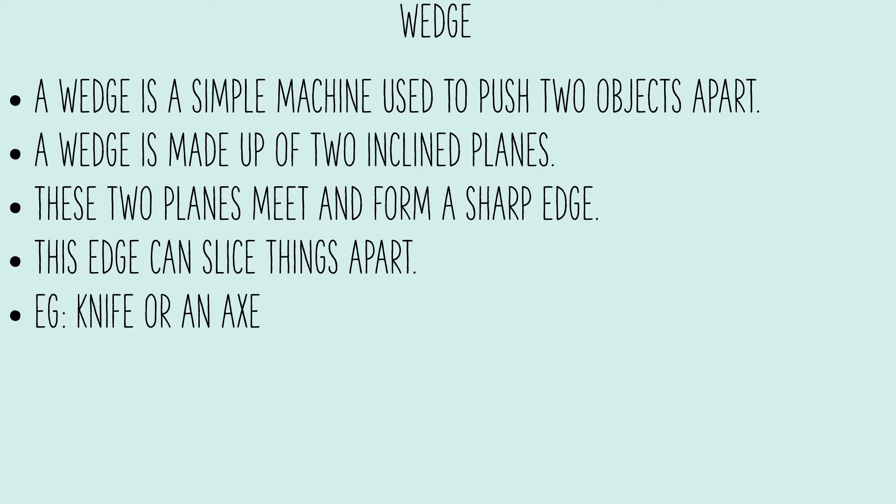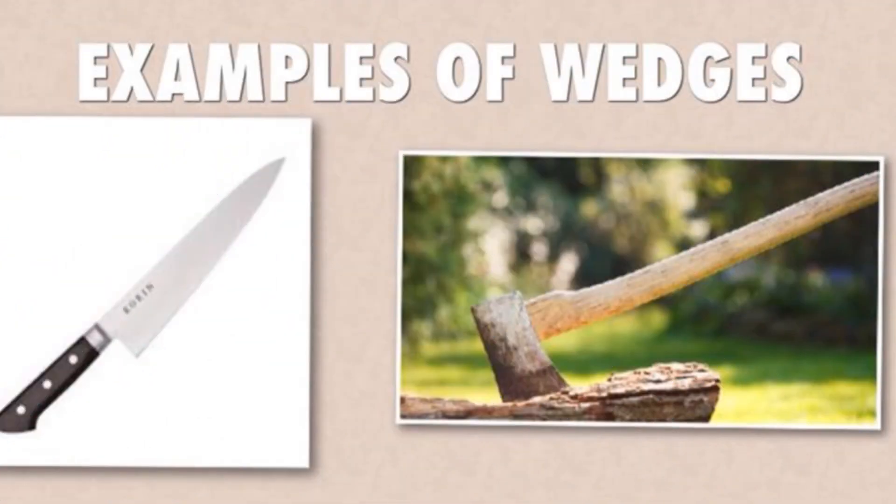Wedge. A wedge is a simple machine used to push two objects apart. A wedge is made of two inclined planes — these two planes meet and form a sharp edge which can slice things apart. Examples: knife and axe.